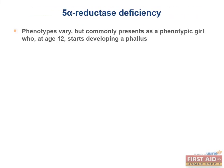5-alpha reductase deficiency classically presents on step one as a phenotypic girl with a phallus presenting at age 12. Without 5-alpha reductase, you're not going to have that conversion of testosterone to dihydrotestosterone. So your external male phenotype is going to be suppressed until you get that surge of testosterone at adolescence, which will help overcome that deficiency and give the minimal threshold of DHT necessary to generate a degree of male external phenotype.